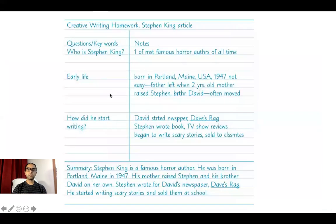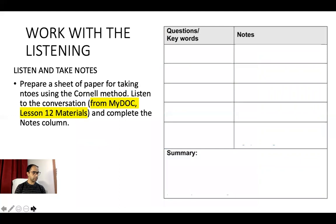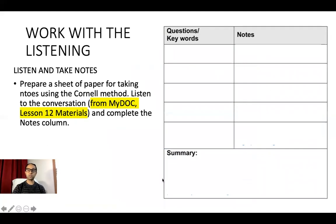When you take notes it will look like this — questions and keywords on the left side, notes on the right side, and summary at the bottom. In today's listening I want you to practice this method. For the main listening on page 176, 'Listen and Take Notes,' prepare a sheet of paper, make a chart with questions and keywords, notes, and summary columns.